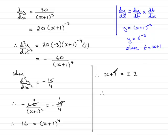So therefore, if I subtract 1 now from both sides, I can get that x equals either plus 2 minus 1, which is 1, or I have -2 minus another 1, which is x equals -3. So these are my two real values of x for which d²y/dx² equals -15/4.